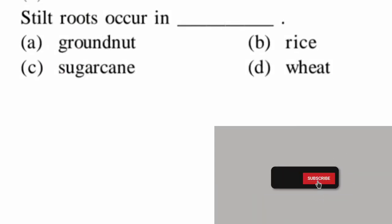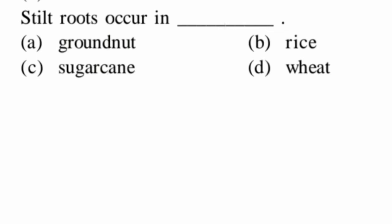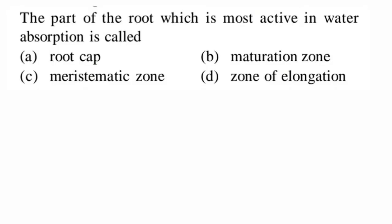Next question: stilt roots — stilt roots are also a type of adventitious roots mainly for mechanical support. They normally arise from the lower nodes of the stem and enter the soil obliquely. Rice and wheat have fibrous roots, but sugarcane is the correct example for stilt roots. So option C, sugarcane, is correct.